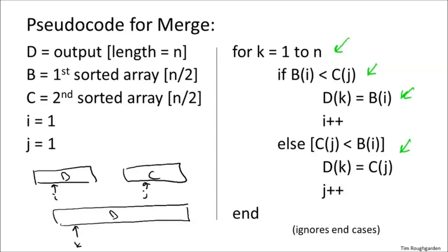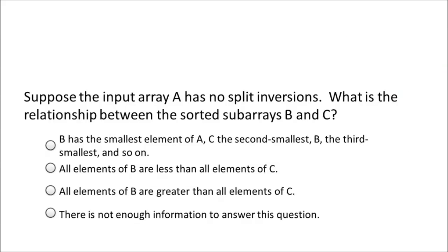To get some feel for what this has to do with split inversions, think about an input array A that has no split inversions whatsoever. Every inversion in this input array A is going to be either a left inversion — both indices are at most N over two — or a right inversion — both indices are strictly greater than N over two. Given such an array A, what do the sorted subarrays B and C look like at the merge step?